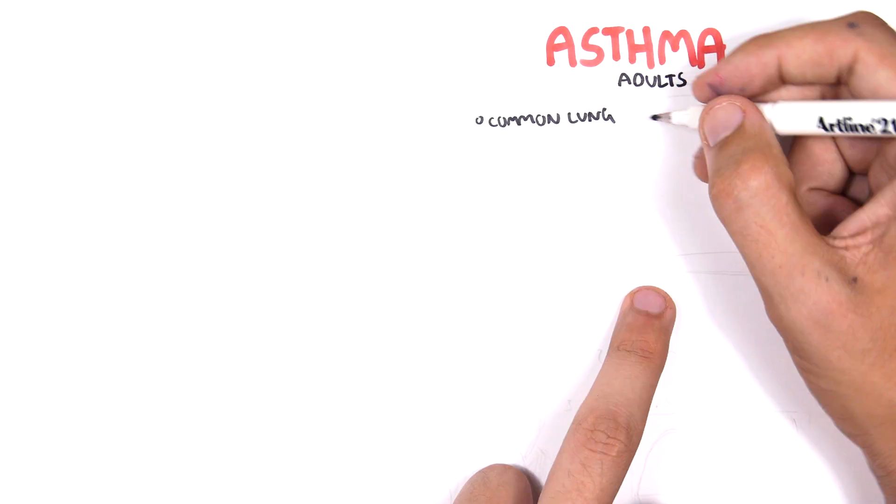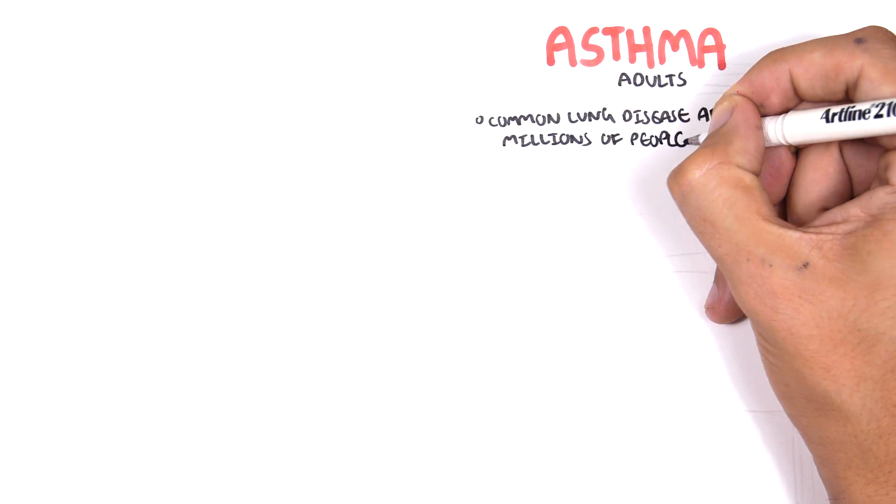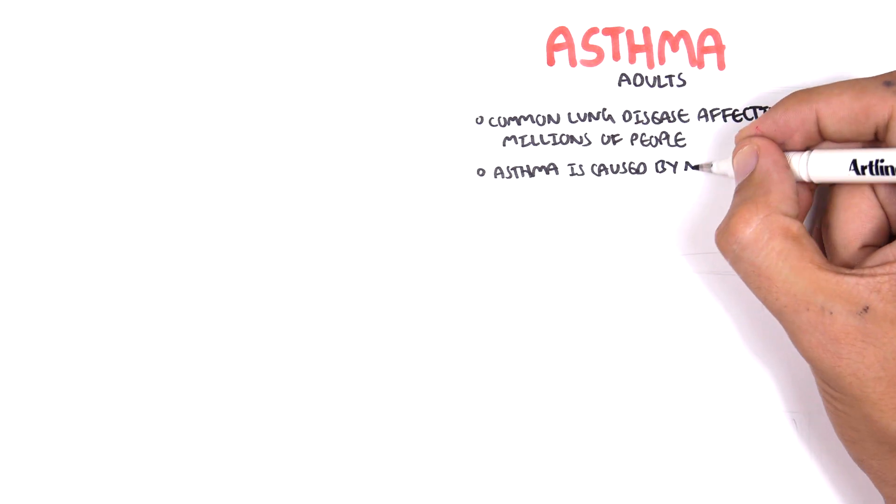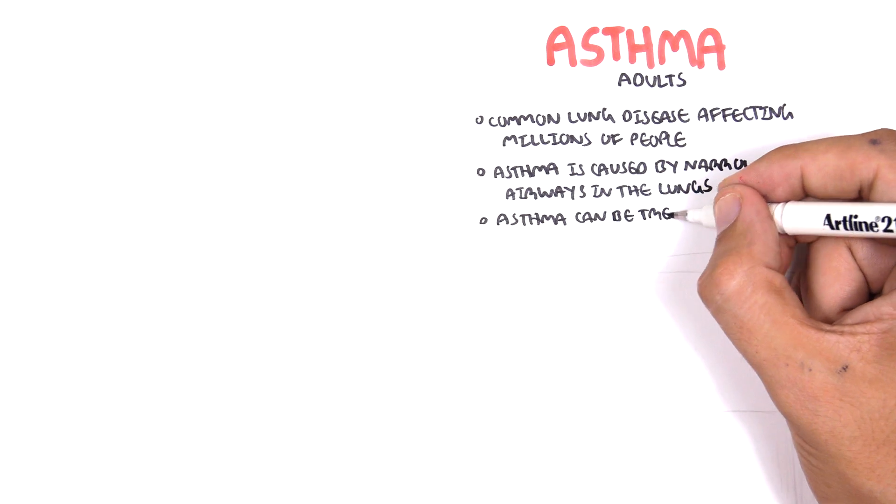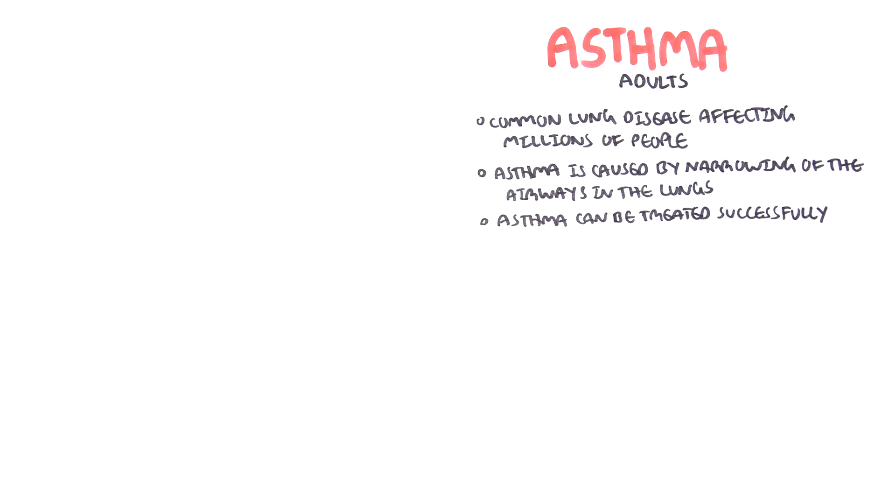Asthma is a common lung disease affecting millions of people. Asthma is caused by narrowing of the airways in the lungs. Asthma can be treated successfully and is also related to other atopic disorders.